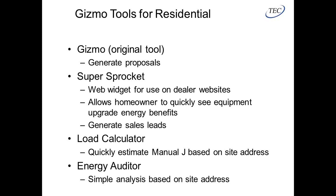The second tool is Super Sprocket — a website widget that dealers install on their own website. Consumers can click a link like 'see my energy savings,' plug in their address, and the tool finds information about that homeowner's house based on tax records, similar to Zillow. It finds square footage, construction date, and uses the zip code for weather data to estimate potential energy savings from upgrading their furnace and AC.